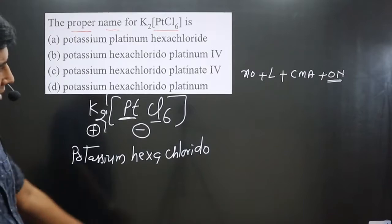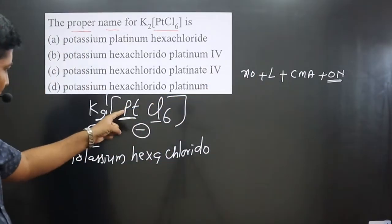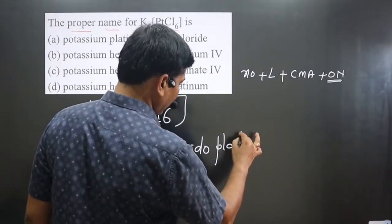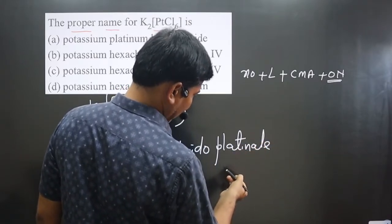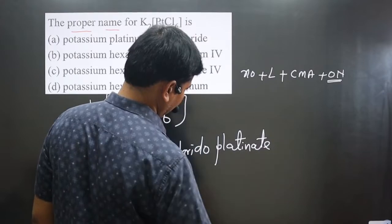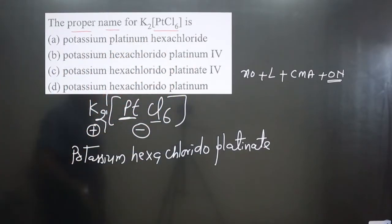Then we have the central metal atom. It will be platinate because it is present in anionic part. Platinate is there.